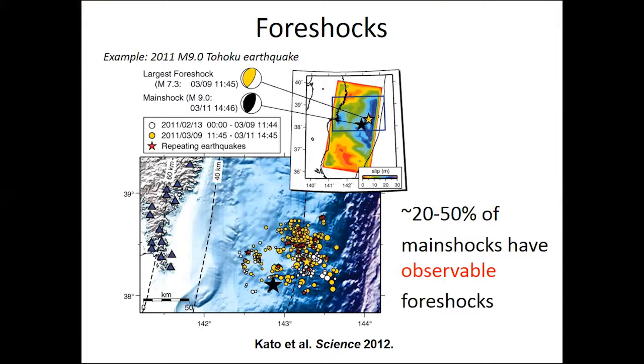Something like, depending on how you do the statistics, and Morgan will probably clean this up later on today, but something like 20 to 50 percent of main shocks have observable foreshocks. The converse, though, is not true.